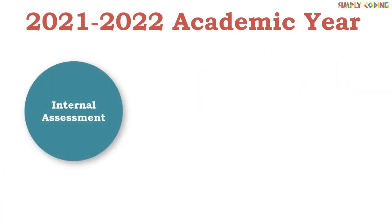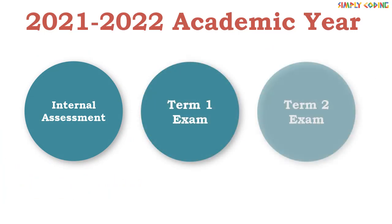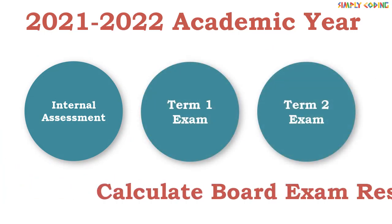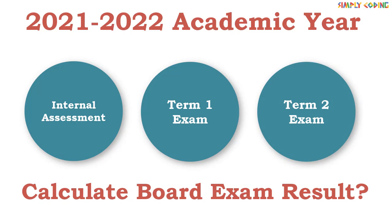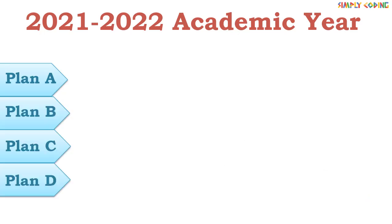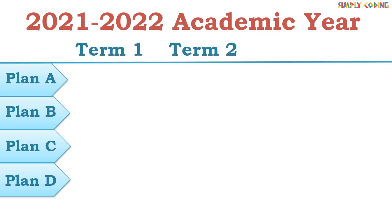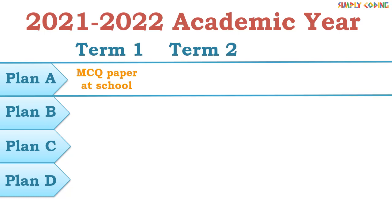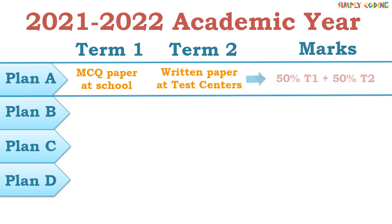Now that we have understood internal assessment, term 1, and term 2, how will they be used to calculate the final board result? The board has gone to great lengths to come up with plan A, plan B, plan C, and even a plan D. Plan A is that everything is normal — you are all able to go to school for term 1 MCQs and to test centers for the term 2 exam. In that case, your marks are the sum of term 1 and term 2 marks, with 50% weightage each.